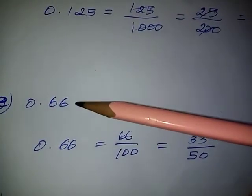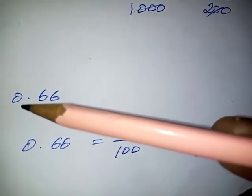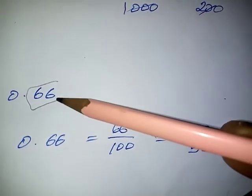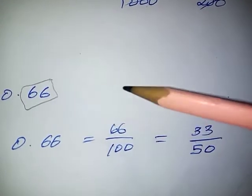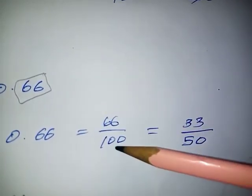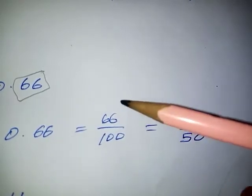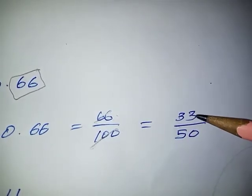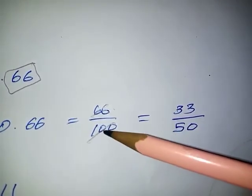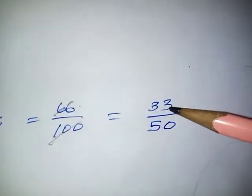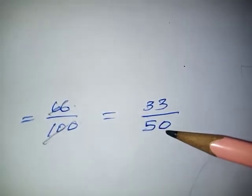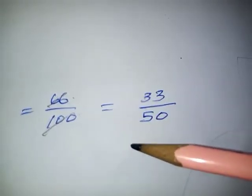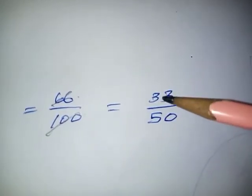Next: 0.66. The integral part is 0 and the decimal part is in the 10th and 100th places. So we write the fraction as 66 by 100. Now, 66 and 100 are multiples of 2, so we cancel using the 2 times table: 33 twos are 66 and 50 twos are 100. The fraction becomes 33 by 50. Since 33 and 50 have no common factor, the required fraction is 33 by 50.